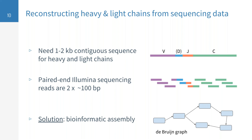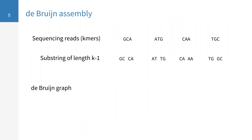To frame the problem: what we need is anywhere from a half kb to two kb continuous sequence in order to reconstruct the heavy and light chain. However, paired-end Illumina sequencing reads are only roughly 2×100 base pairs. So how do we regenerate that full heavy and light chain transcript from these short reads? The solution is a de Bruijn graph. In a simple example, you generate sequencing reads called k-mers, then subsequently break them into substrings of length k-1.